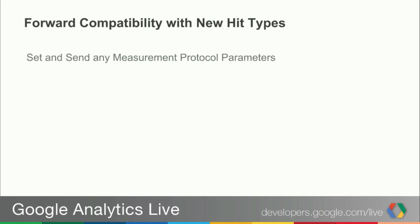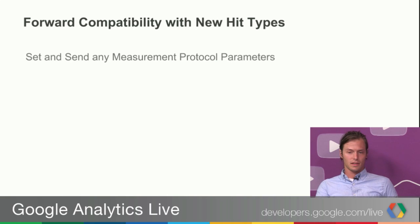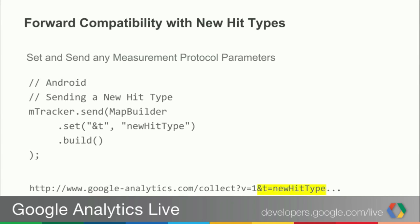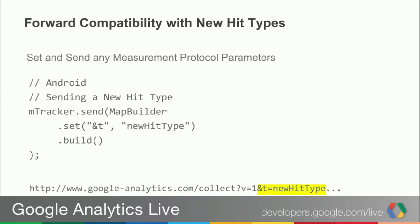The v3 SDK also enables forward compatibility with new hit types by letting you pass in any parameter name and value through the set or send methods. Previously in v2, all the parameters were predefined. Now you can set anything you want, anytime, enabling you to add new parameters and hit types as they become available. This also means you could send web page views from the app SDK if you wanted to.